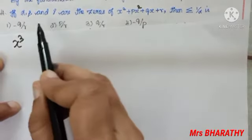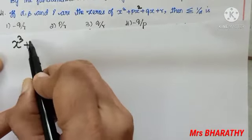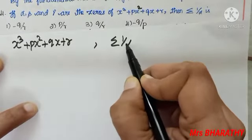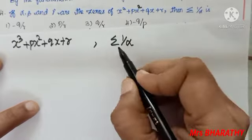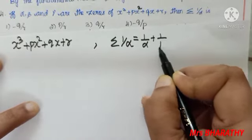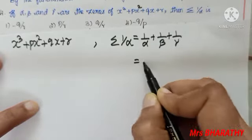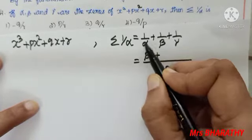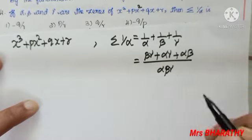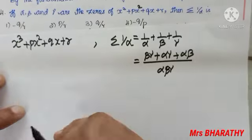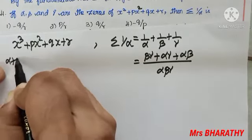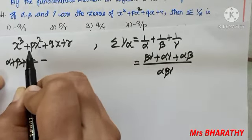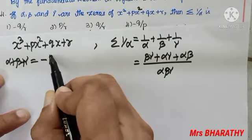Question number 4: if α, β, γ are the zeros of x³ + px² + qx + r, we need to find Σ(1/α). We know Σ(1/α) = 1/α + 1/β + 1/γ. Taking LCM as αβγ and cross-multiplying, we get (βγ + αγ + αβ) in the numerator. For a single root combination, α + β + γ = -p/1; for the double root combination, αβ + βγ + γα = q/1.